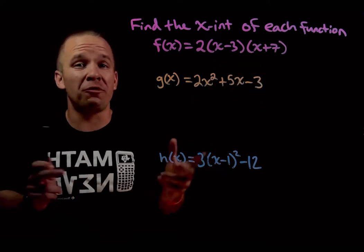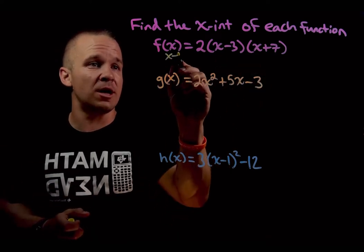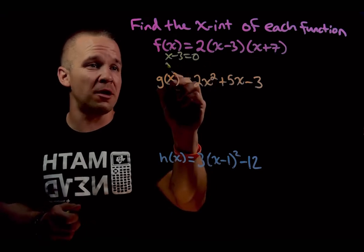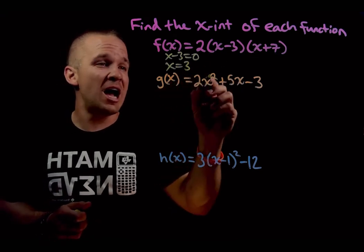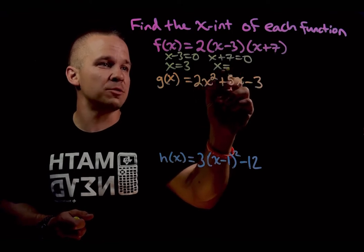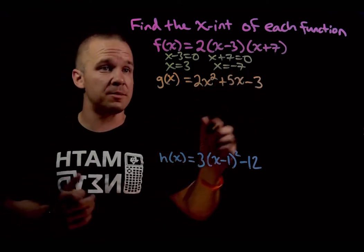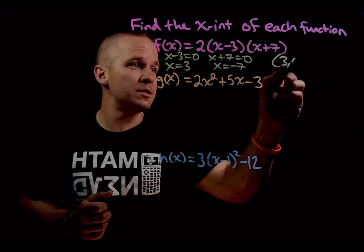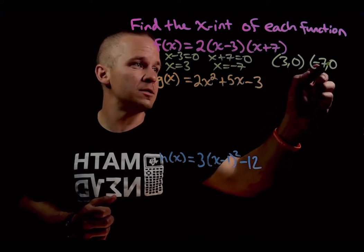I just need to set my two factors equal to zero and solve. So I'll have x minus three equals zero. I'll add three and I'll get x equals three. I have x plus seven equal to zero. I'll subtract seven and I'll get x equals negative seven. So my two x-intercepts are three comma zero and negative seven comma zero.